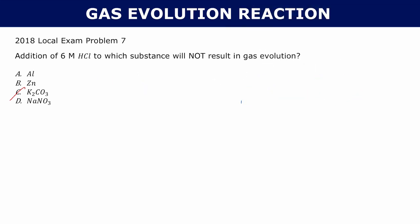Let's start with aluminum reacting with hydrochloric acid. Aluminum has a charge of 3+, so it pairs up with chloride to form AlCl₃, aluminum chloride. Hydrogen is left on its own, but hydrogen is a diatomic element, so you need H₂. Aluminum reacts with hydrochloric acid to produce aluminum chloride and hydrogen gas. So it can't be A.